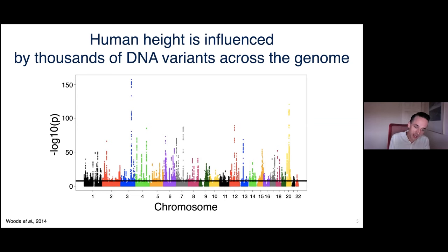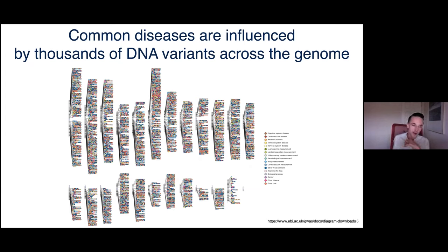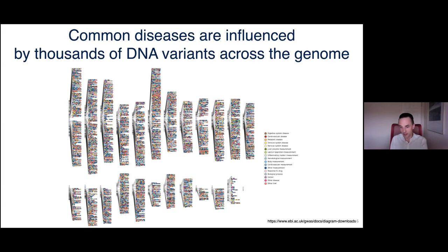Human height isn't the only trait like this. Many morphological traits and common diseases have these complex genetic architectures. Here's a screenshot from the National Human Genome Research Institute showing associations for diseases like diabetes and the risk for heart attack — all very highly distributed across the genome.